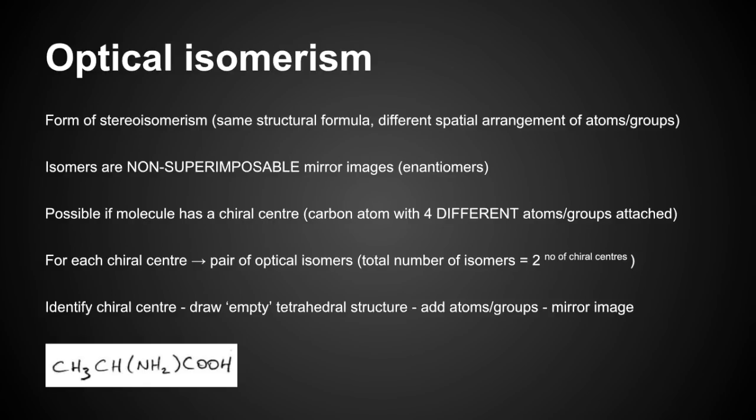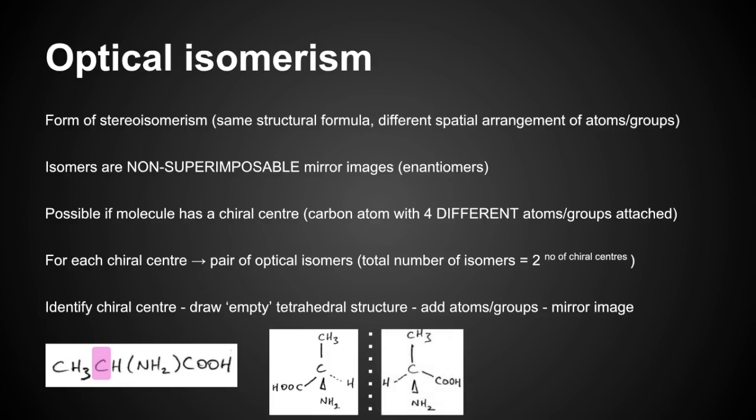I'm going to finish with the sequence of steps you need to go through to construct those 3D diagrams for optical isomers. You identify the chiral centre first, you draw what I call an empty tetrahedral structure, you add your four atoms or groups in any order you want, and then you mirror what you've drawn on the other side. We'll use this as an example. This is alanine, the amino acid with the CH3 group as its R group. Identify the chiral centre, which is that carbon there. There's my empty tetrahedral structure. I've chosen to put the CH3 group at the top. Then I'm just going to mirror that on the other side. Make sure you get your dashed lines in and your wedge to show the 3D arrangement.